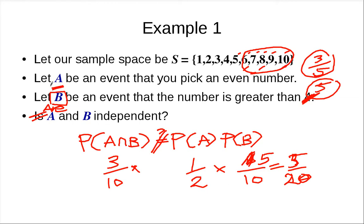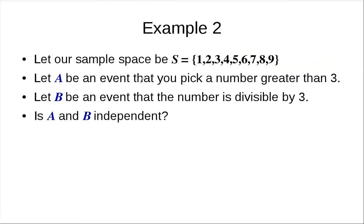Remember: dependent does not mean that B causes A. There's no causal relationship here. It just means that knowing B appears changes the likelihood that A appears.